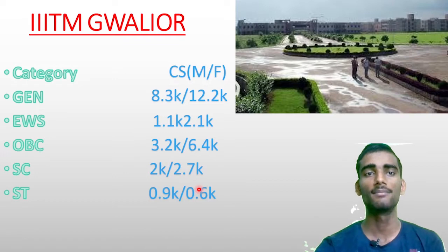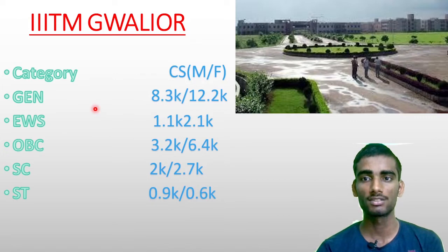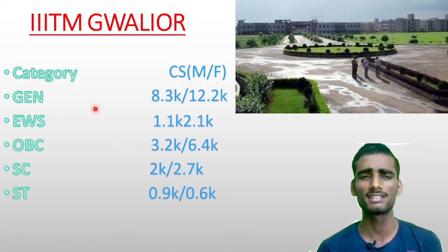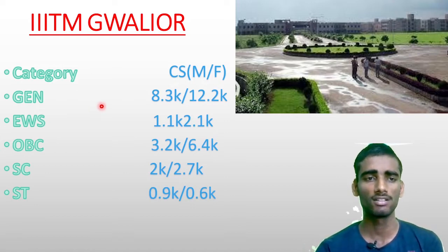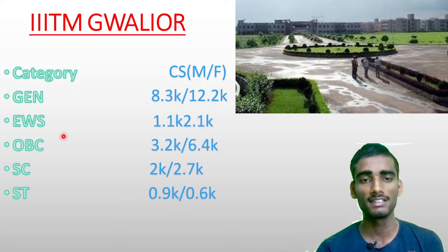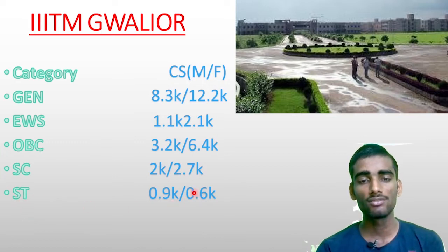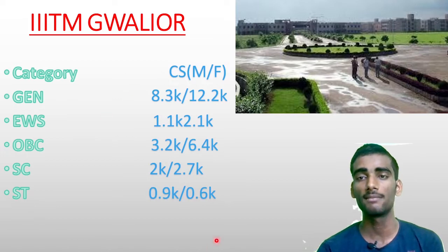Moving to IIIT Gwalior — located in the important city of Gwalior, which has many great colleges. Cutoff for General CSC: 8.3k–12.1k. EWS: 1.1k–2.1k. OBC: 3.2k–6.4k. SC: 2.2k–2.7k. ST: 0.6k–0.9k. This is all about IIIT Gwalior.